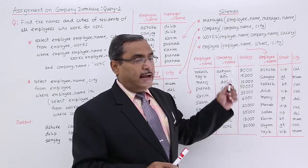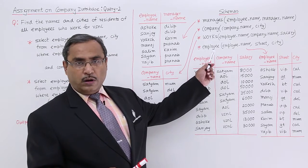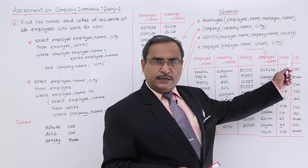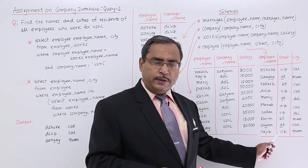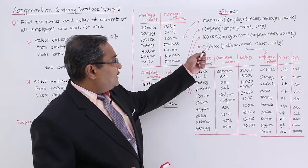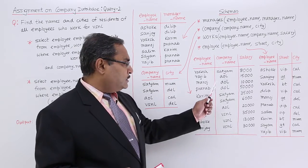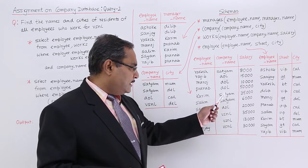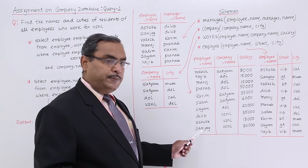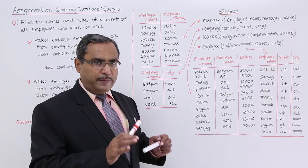Here we are having these pre-existing, pre-discussed schemas: managers, company, works, and employee. The employee name and respective city is available in the employee table, and which employee is working in which company is available in the works table. In the works table we are having the company VSNL, so these three employee names must come as output with the respective city.